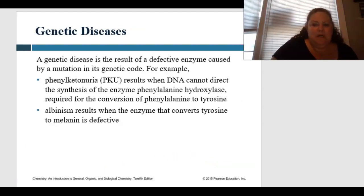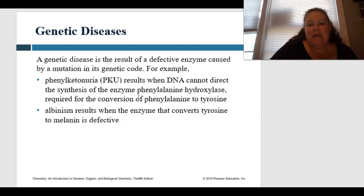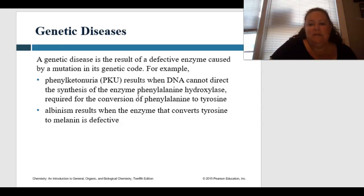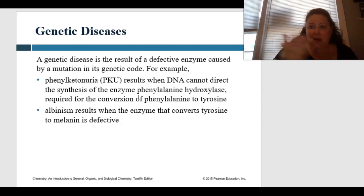A genetic disease results from a defective enzyme caused by a mutation in its genetic code. For example, PKU — phenylketonuria — results from DNA that cannot direct the synthesis of the enzyme phenylalanine hydroxylase, which is required for the conversion of phenylalanine to tyrosine. Another example is albinism, which results when the enzyme that converts tyrosine to melanin is defective — going back to our white peacock and other albino animals and people.